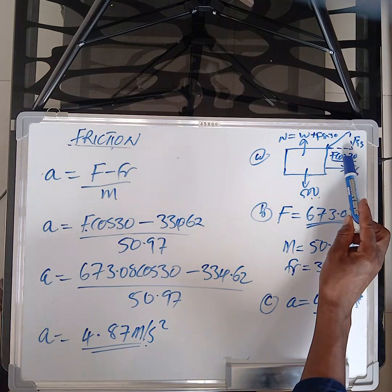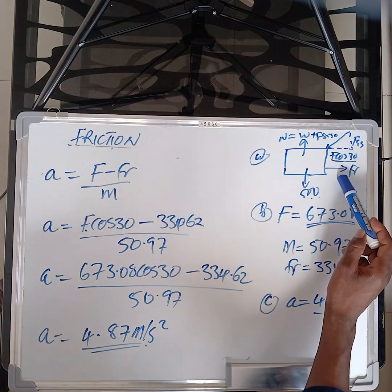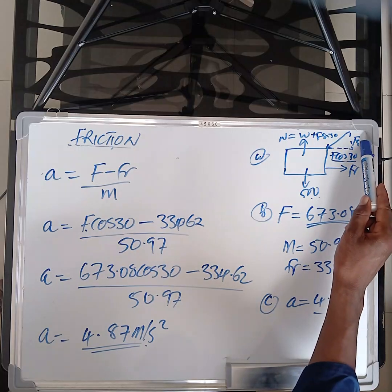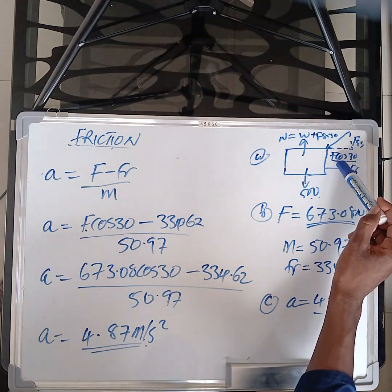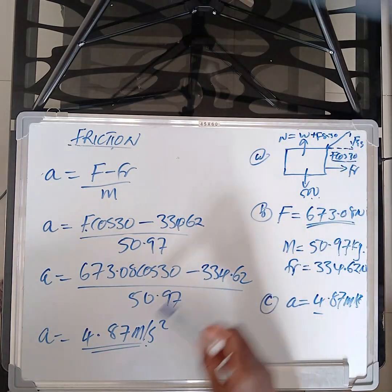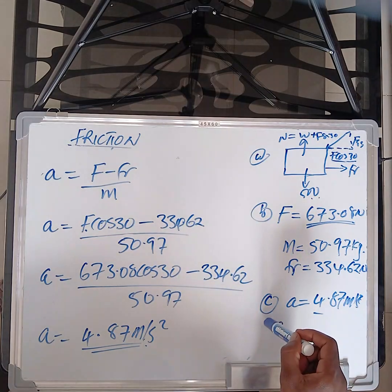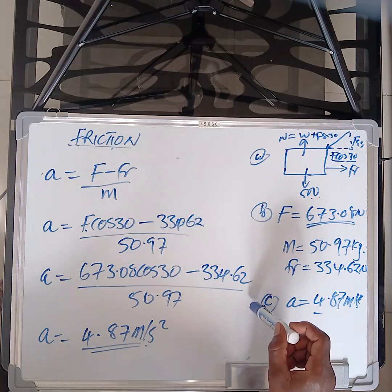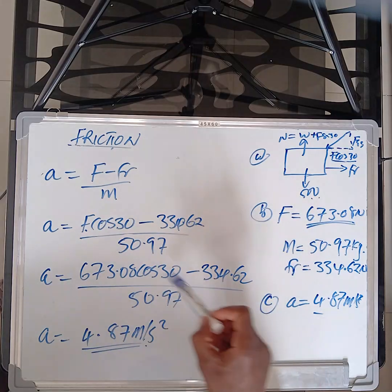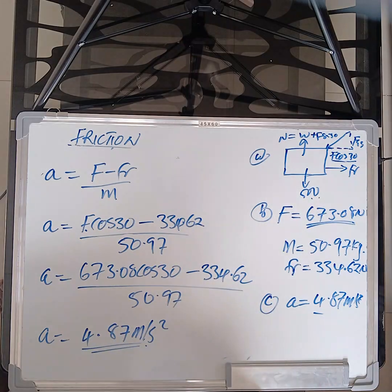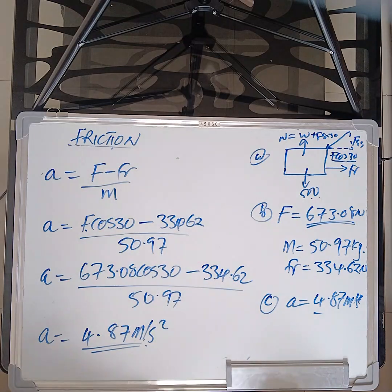So our answer for part C: acceleration = 4.87 m/s². An important reminder: always use F cos 30 — the force component parallel to the direction of motion. The F sin 30 component always adds to the normal force. Subscribe and come back for more — see you in the next lecture.